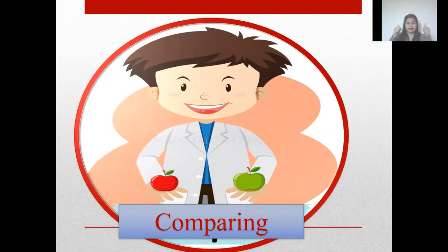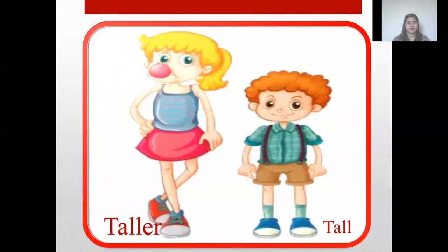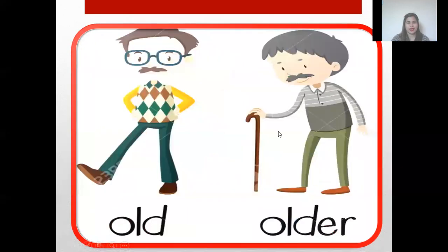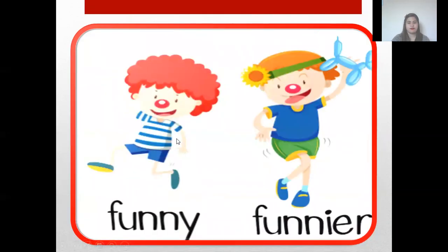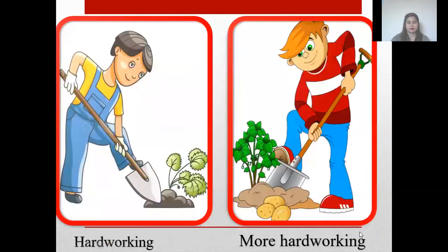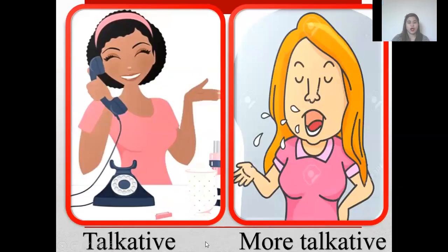The green one — very good! Okay, let us read. Tall, taller. Look at the pictures. Let us compare. The sister is taller than the brother. Okay, next — grandfather and grandmother. Old, older.